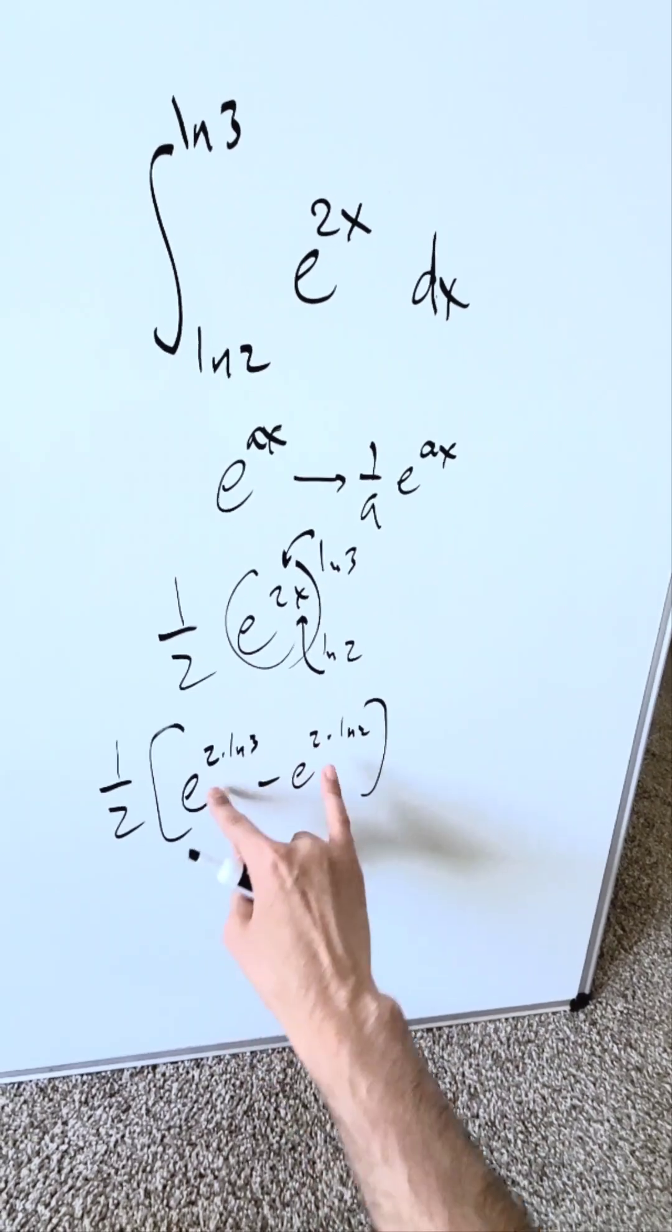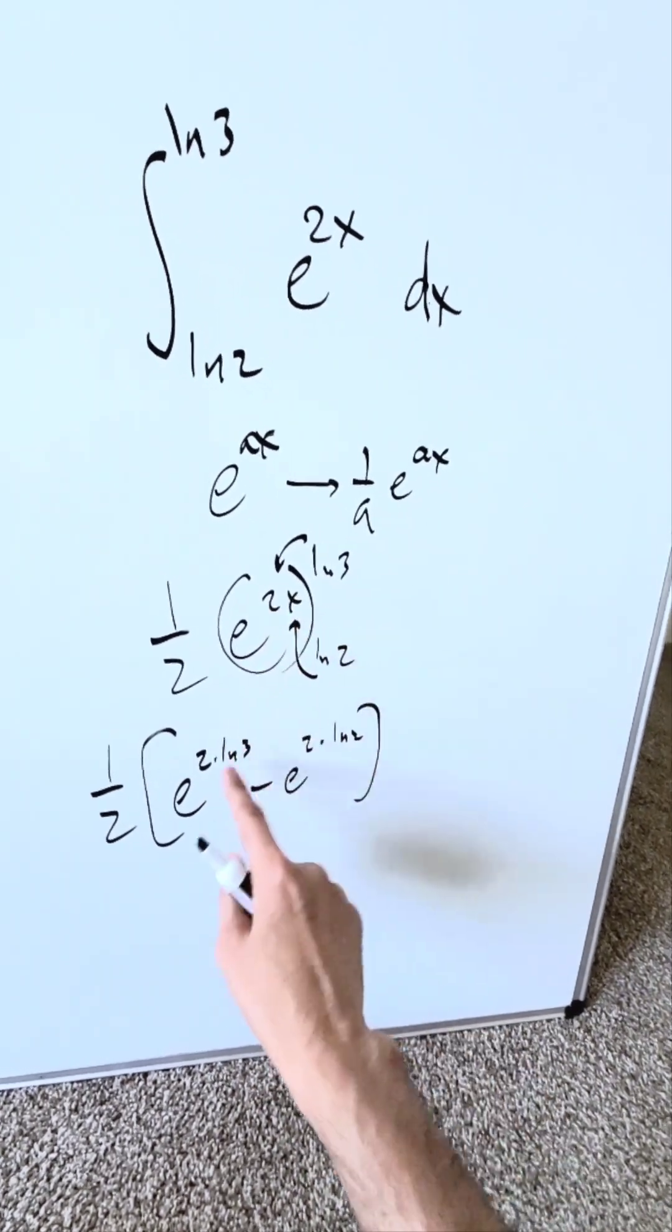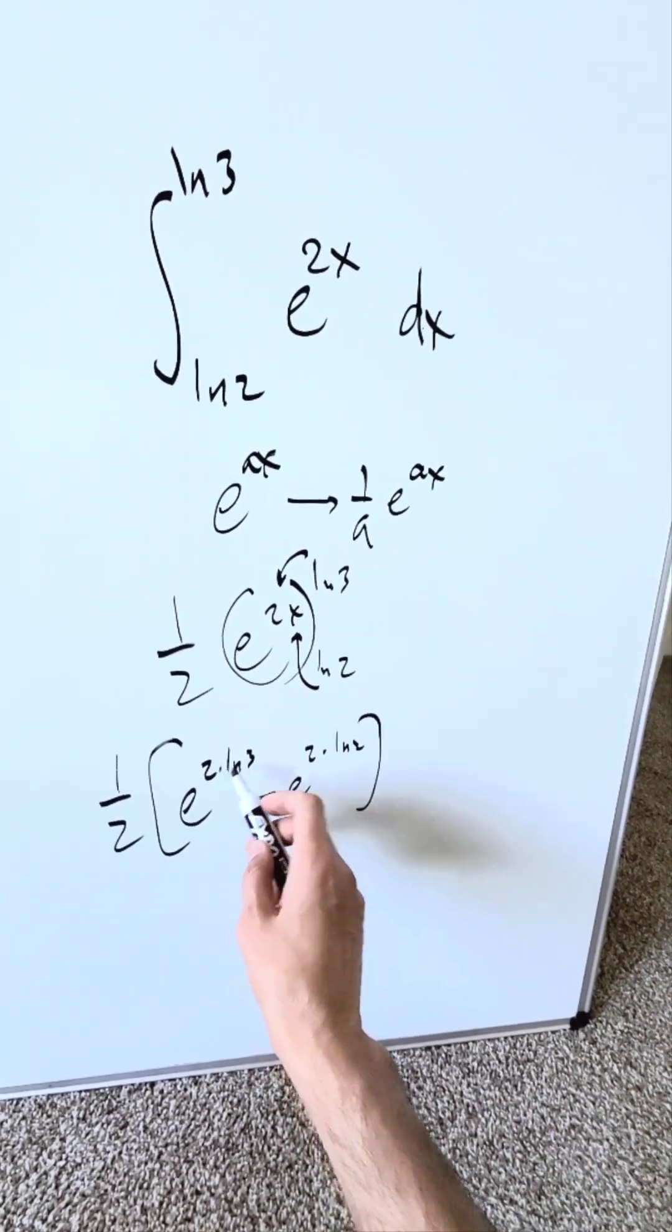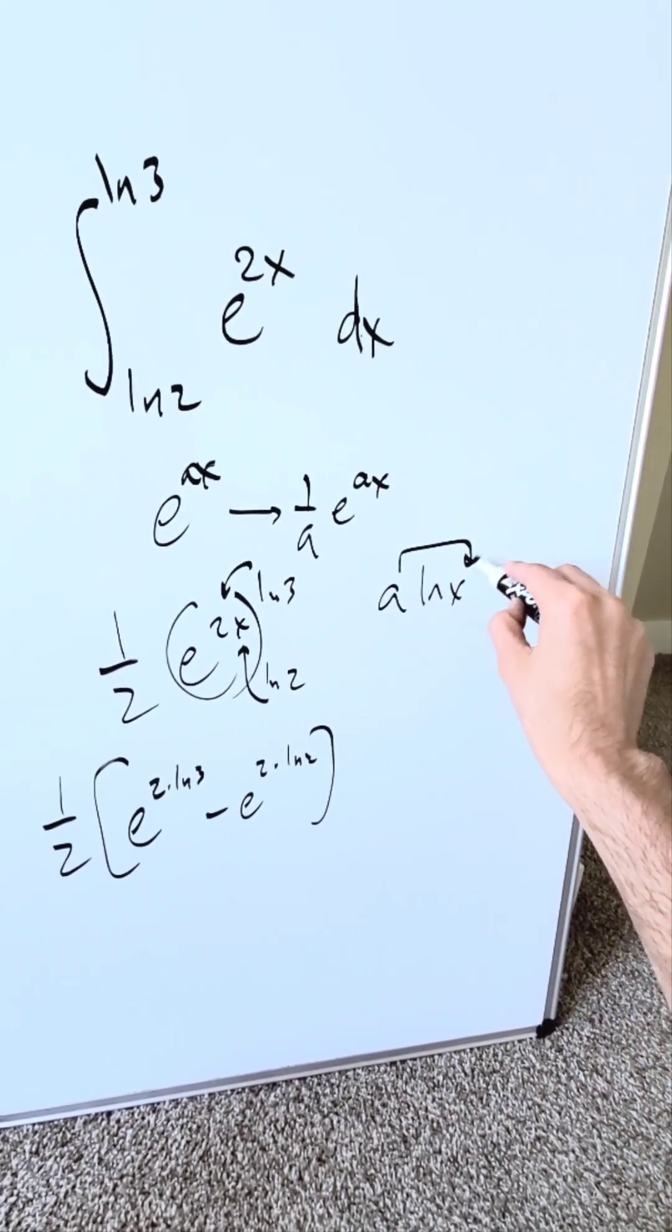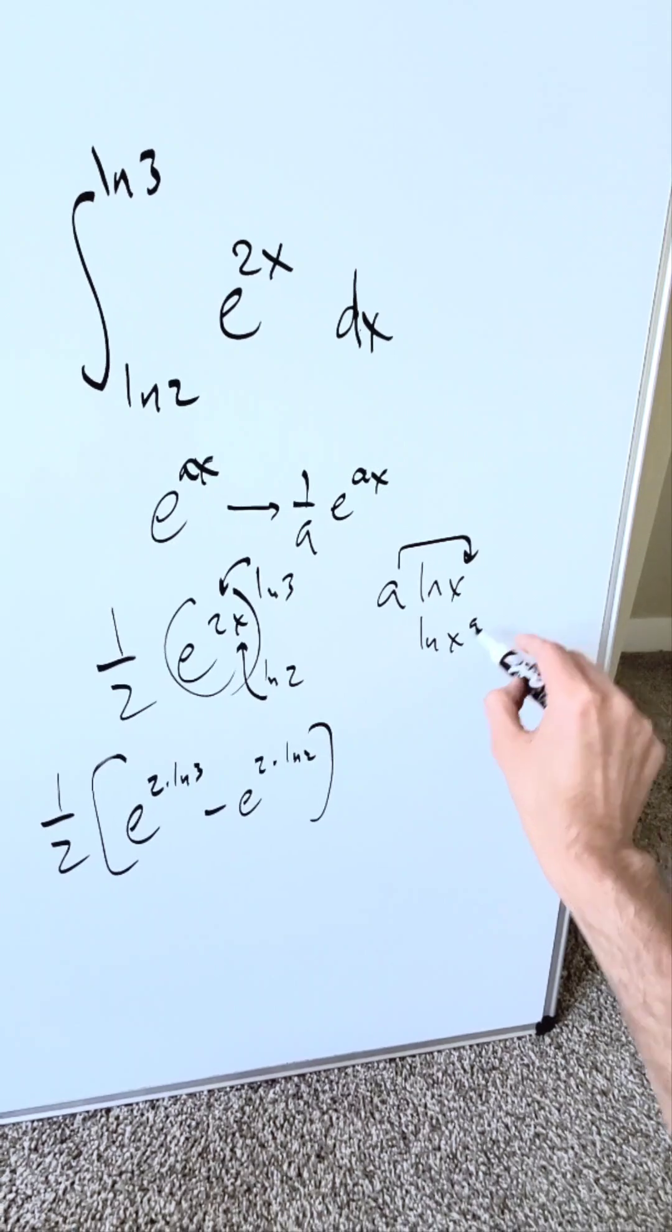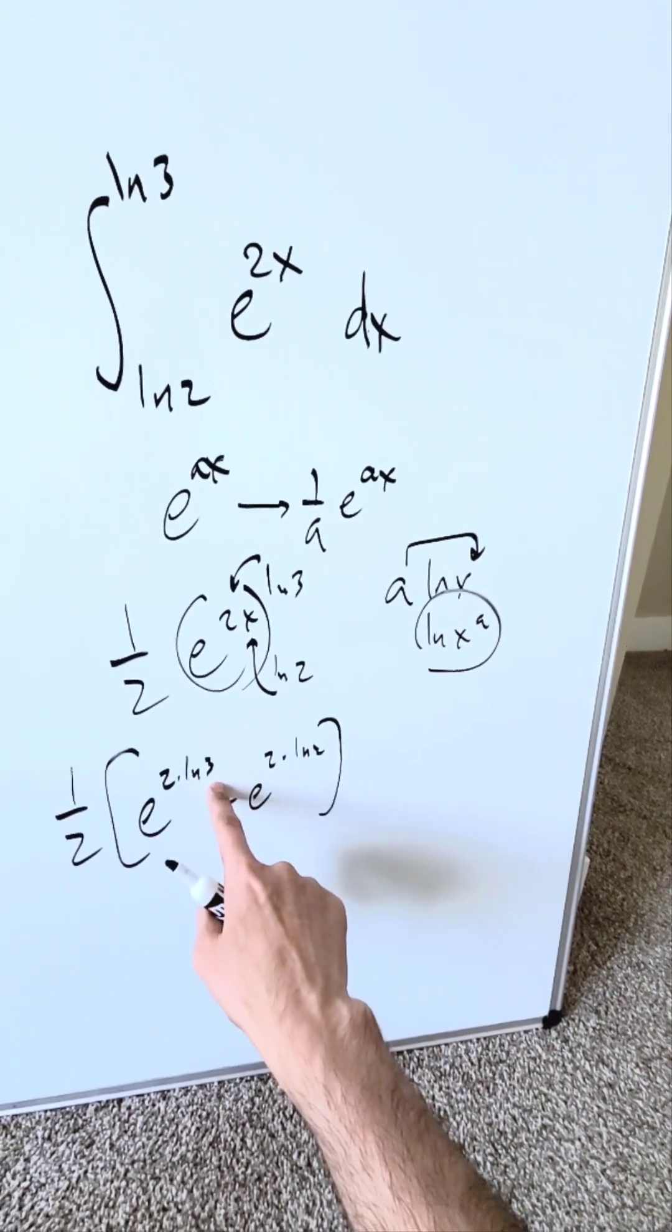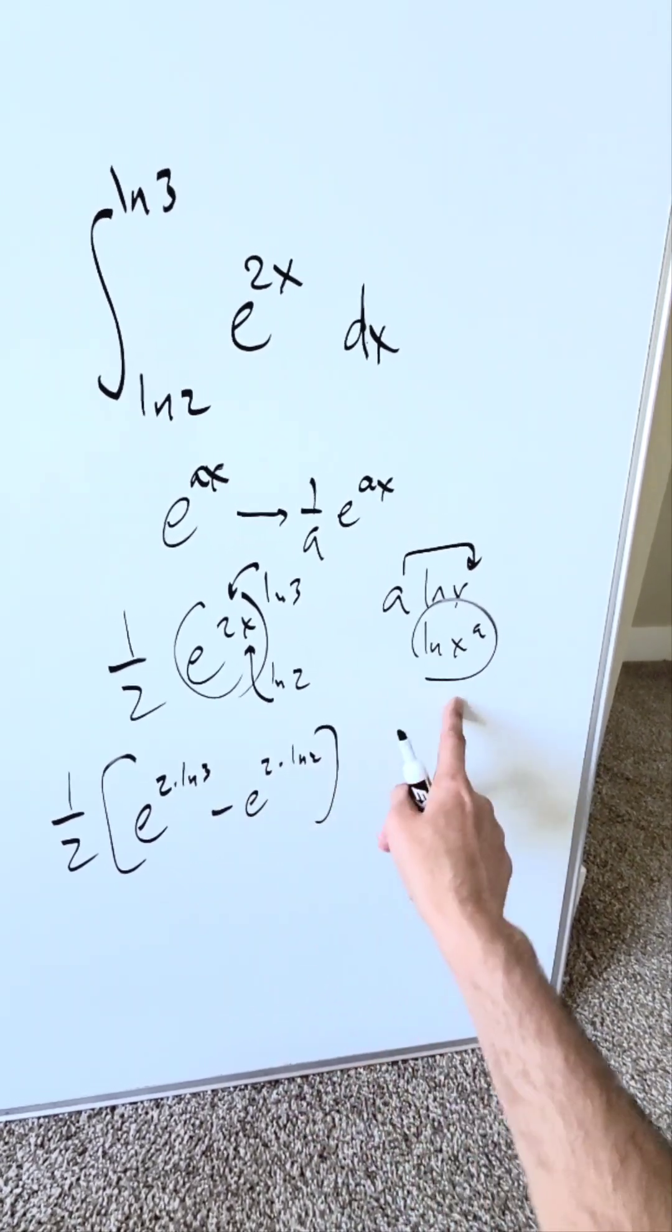Where is this 2 coming from? It's right over here, 2x. Use your properties of logs. If I have something which looks like a times natural log x, this can transport here. You're looking at natural log x to the power of a. I have here 3 squared and 2 squared using this property.